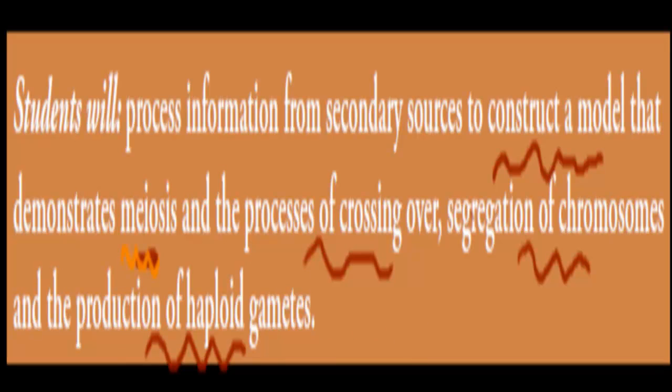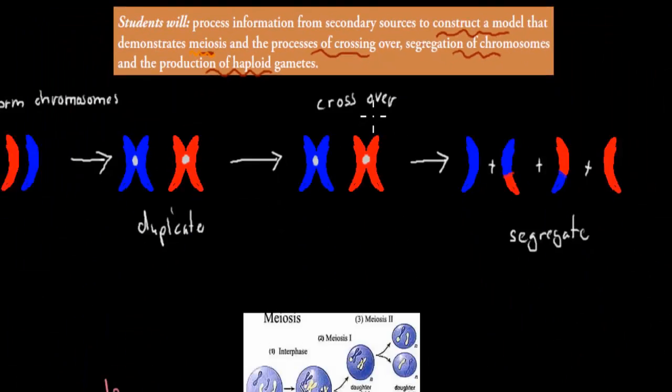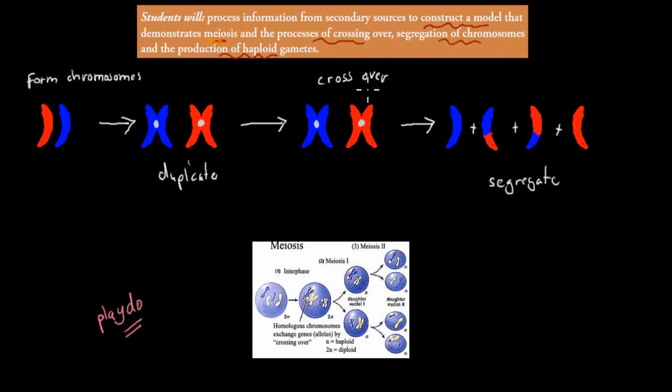Crossing over, segregation of chromosomes, and the production of haploid gametes. That's what I'm going to go over. And also how we can go from chromosomes and duplicating them. And I'll keep it relatively simple, but you might also go and model meiosis in class as well.